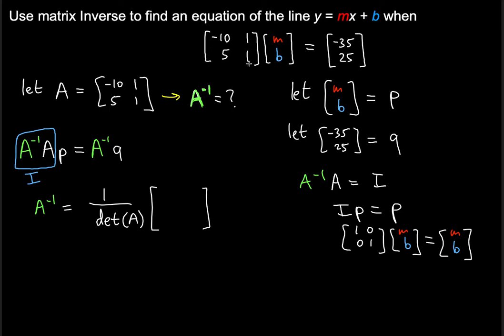It's going to be 1 divided by the determinant of A, times the following. What you want to do, you want to switch these two numbers in the main diagonal. The 1 will go instead of negative 10, and negative 10 will take the place of that 1. And these two in the secondary diagonal, you're just going to negate the signs. This becomes minus 5, and this becomes minus 1.